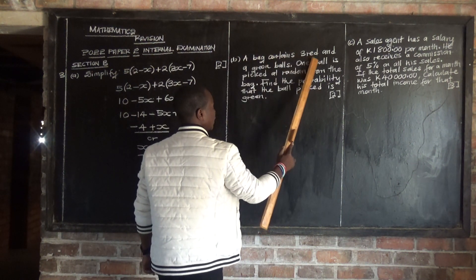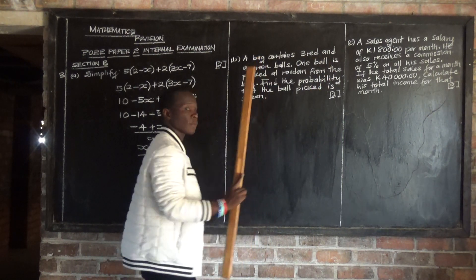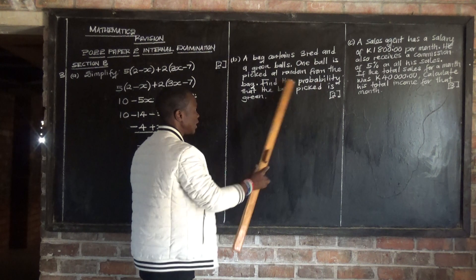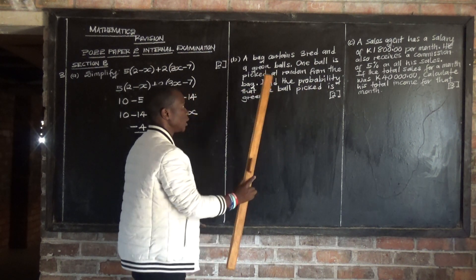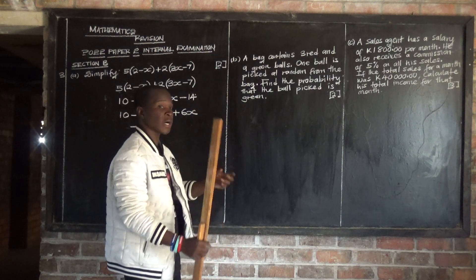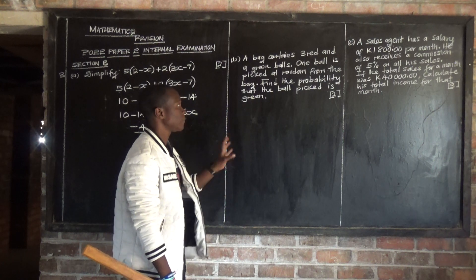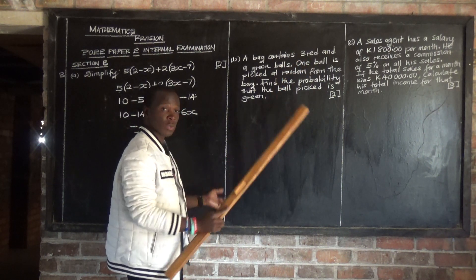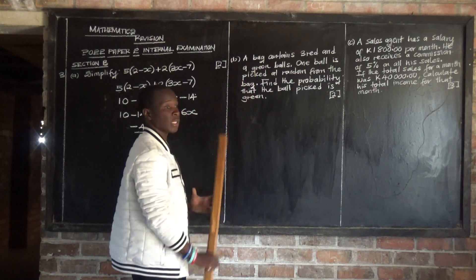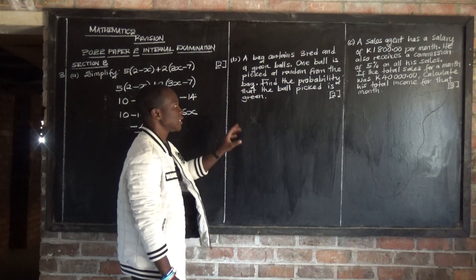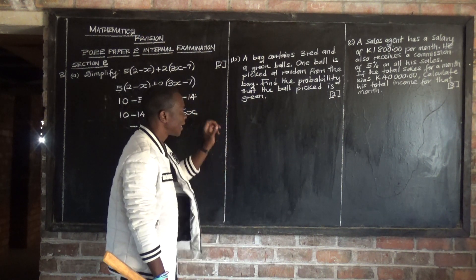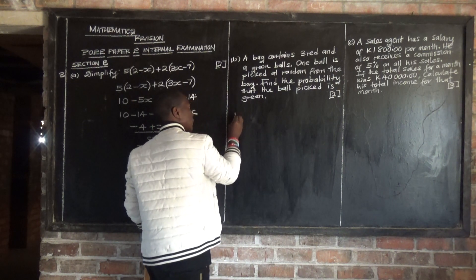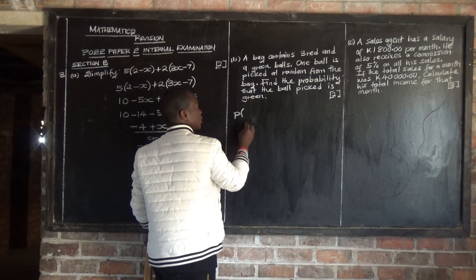A bag contains three red and nine green balls. One ball is picked at random from the bag. Find the probability that the ball picked is green. So that bag consists of 12 balls altogether — out of which three are red and nine are green.